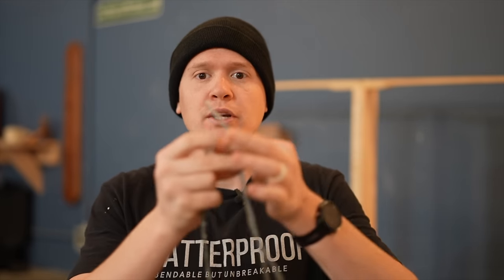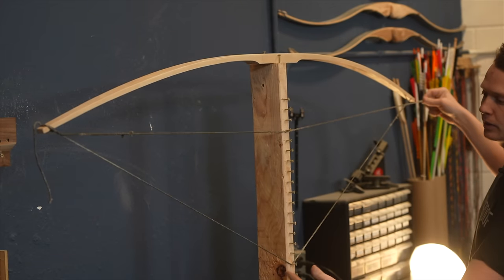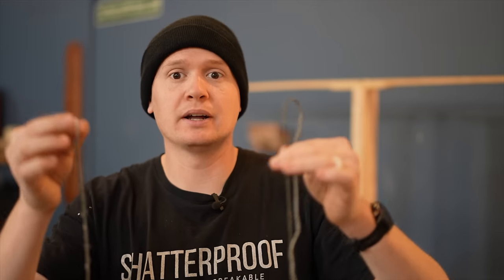Then as the bow starts to bend more and more, you can shorten the length of the string. And actually with a good tillering string, you can shoot the bow with a tillering string on it. And then you know exactly what length of bow string you need to buy or make for your bow that you just built. Good tillering string helps a lot, but not completely necessary.